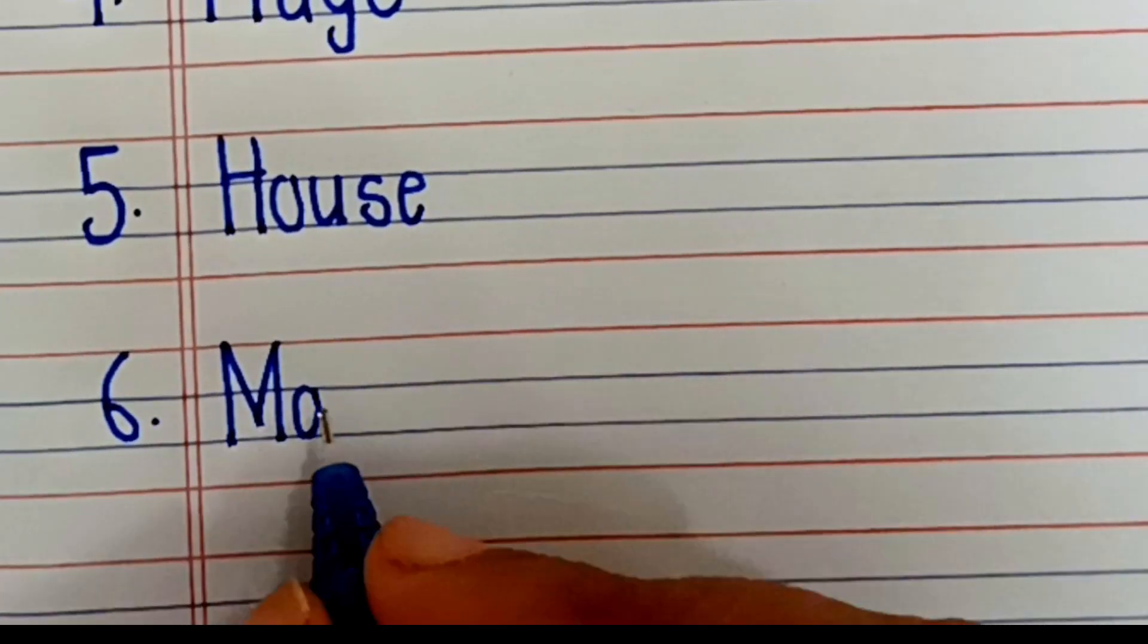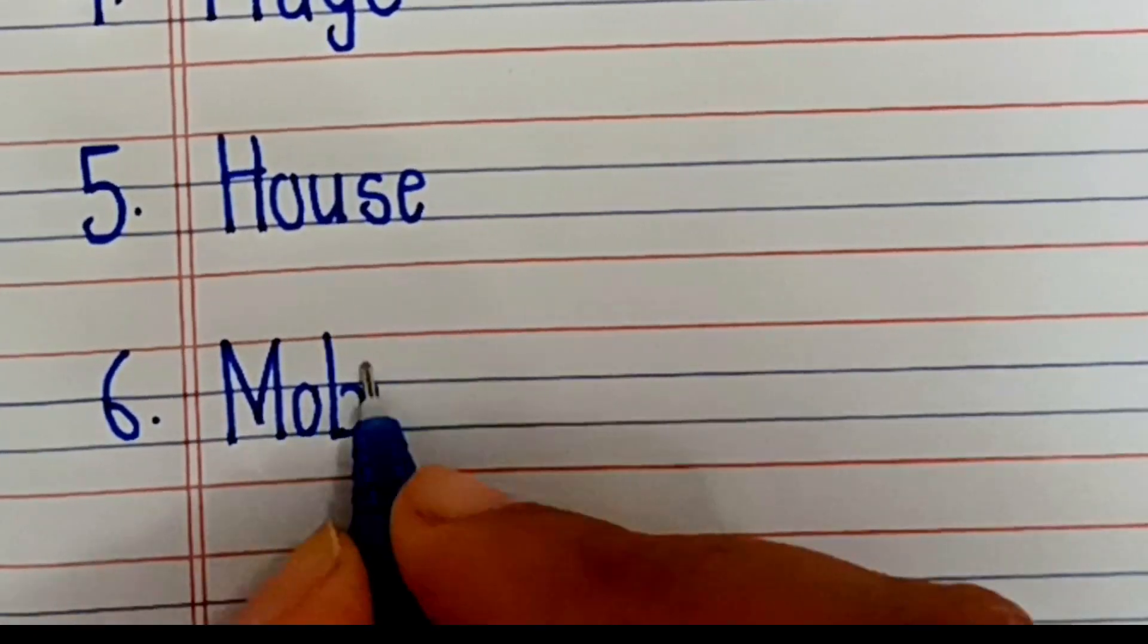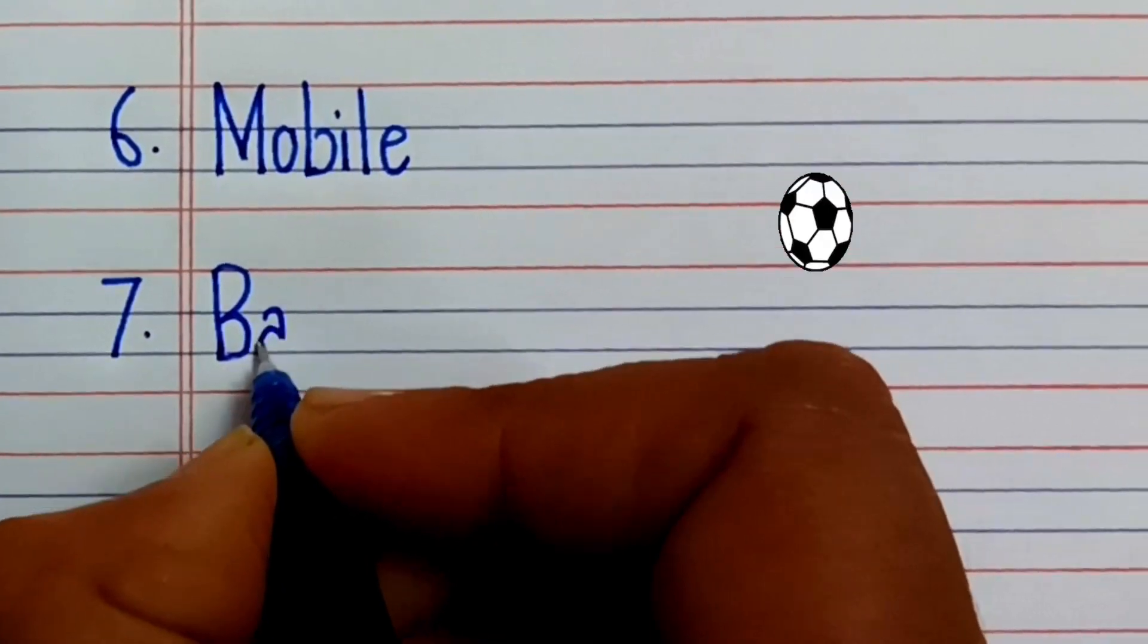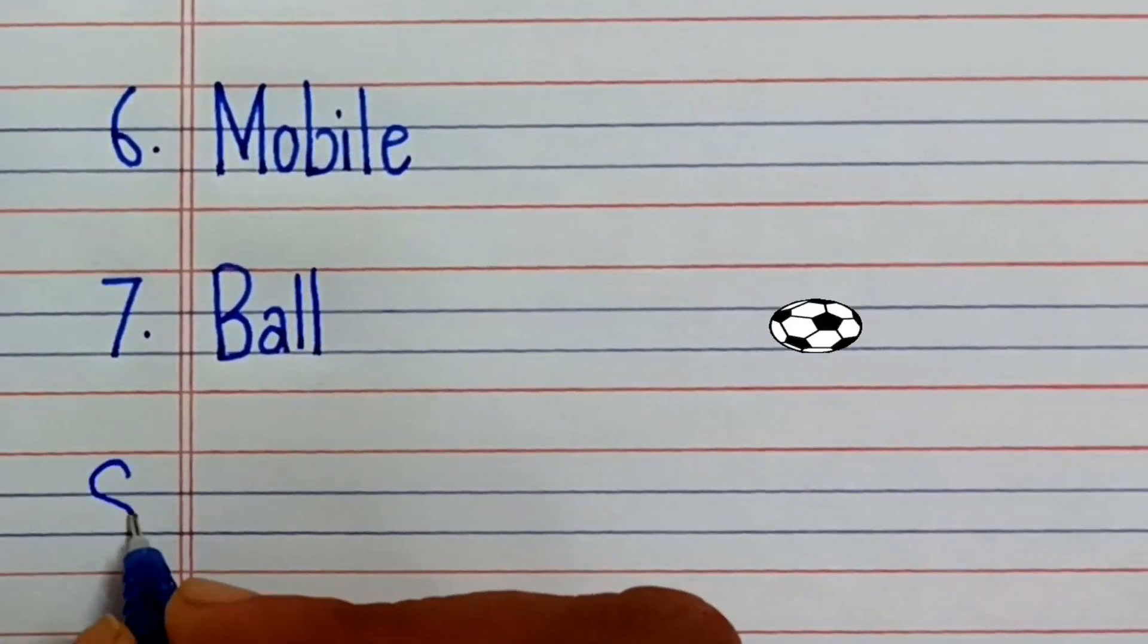Sixth one is mobile. M-O-B-I-L-E, mobile. Seventh one is ball. B-A-L-L, ball.